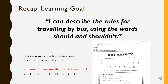Let's look back at our learning goal: I can describe the rules for travelling by bus using the words should and shouldn't. What do you think? Kannst du jetzt sagen die Regeln für fahren mit dem Bus? Und kannst du die englischen Wörter benutzen — should and shouldn't? To help you remember the rules, there's one more worksheet with a secret code to check you know how to catch the bus. See if you can match the patterns to the letters to write the secret messages on the page.